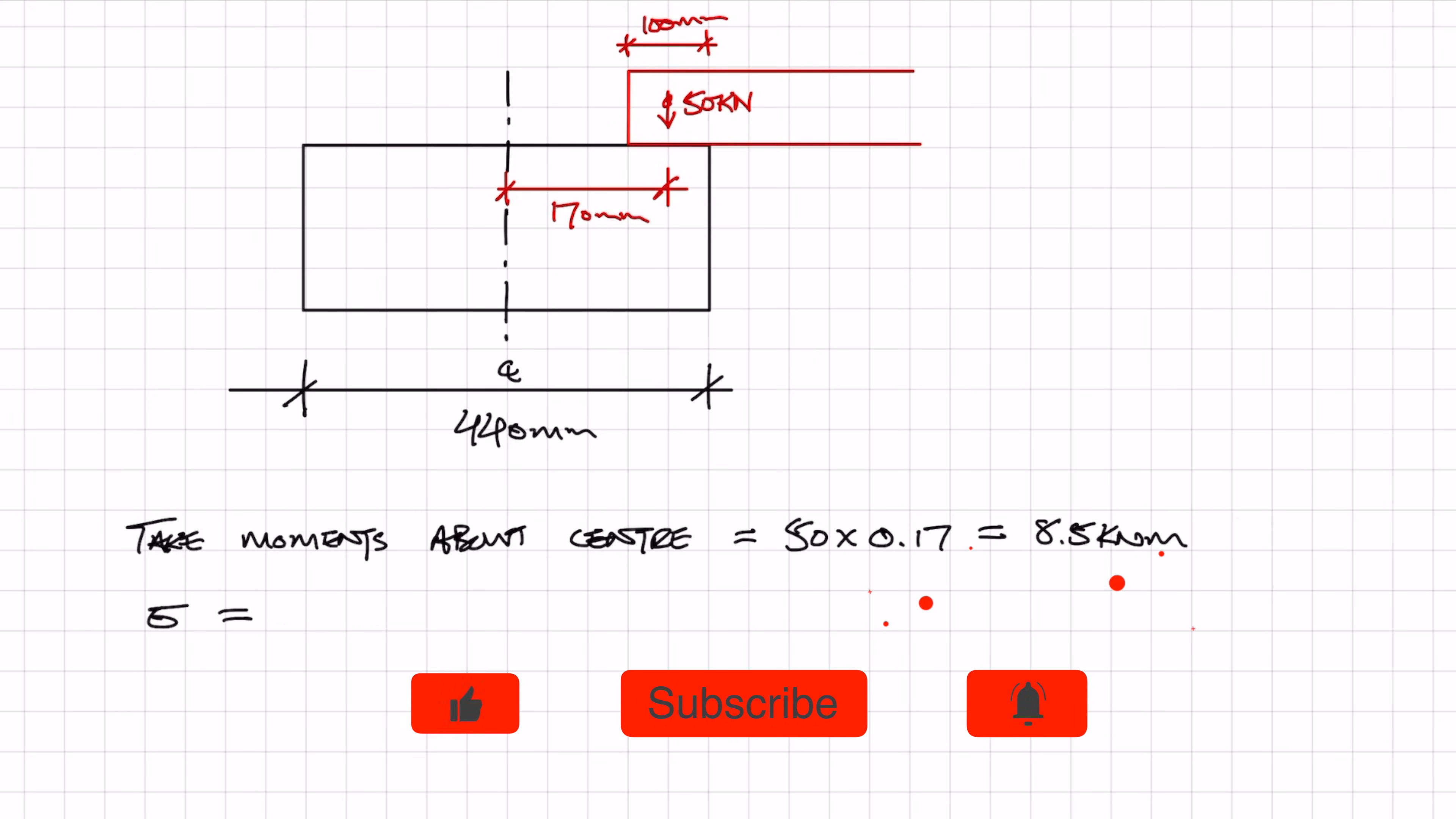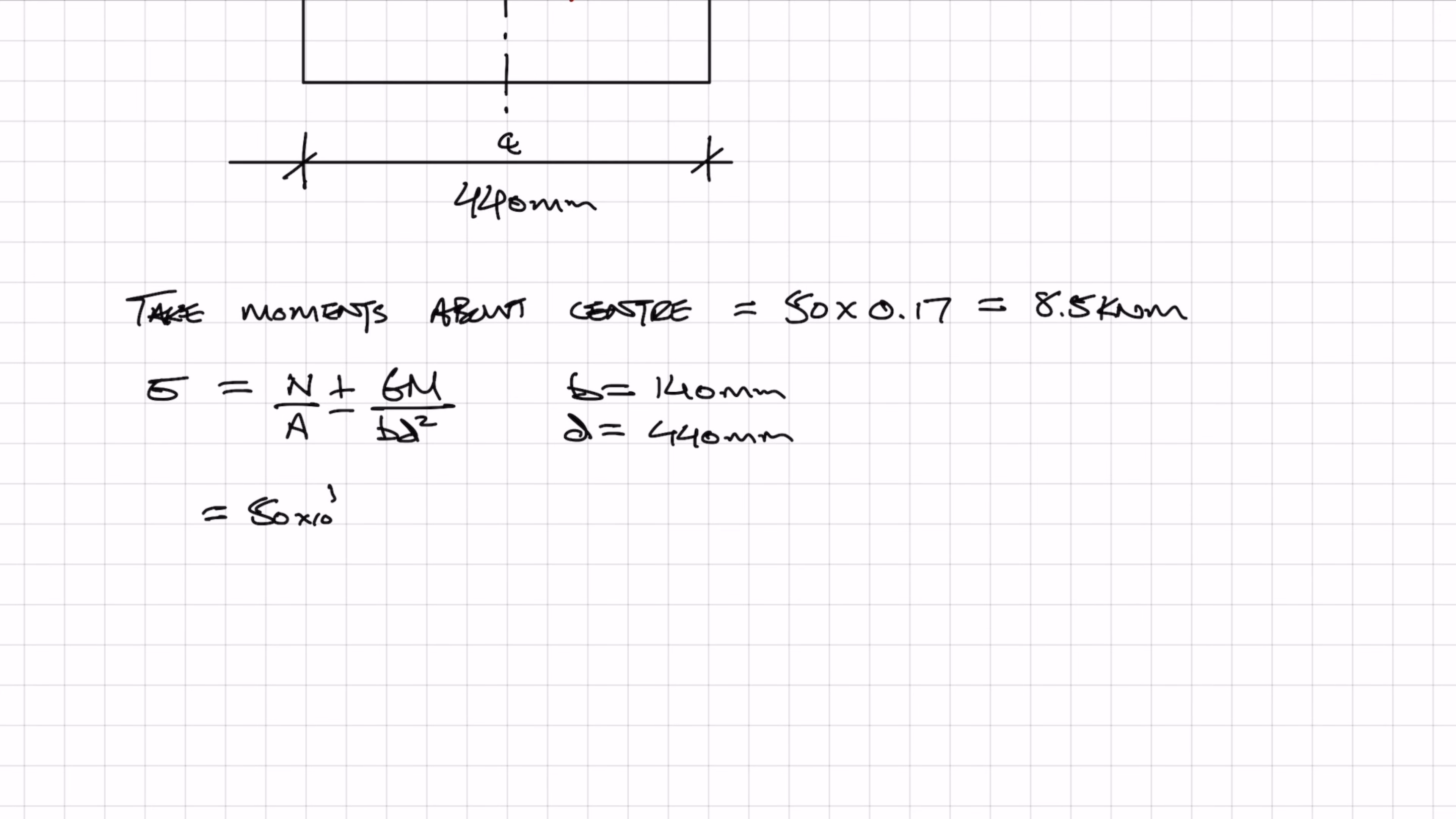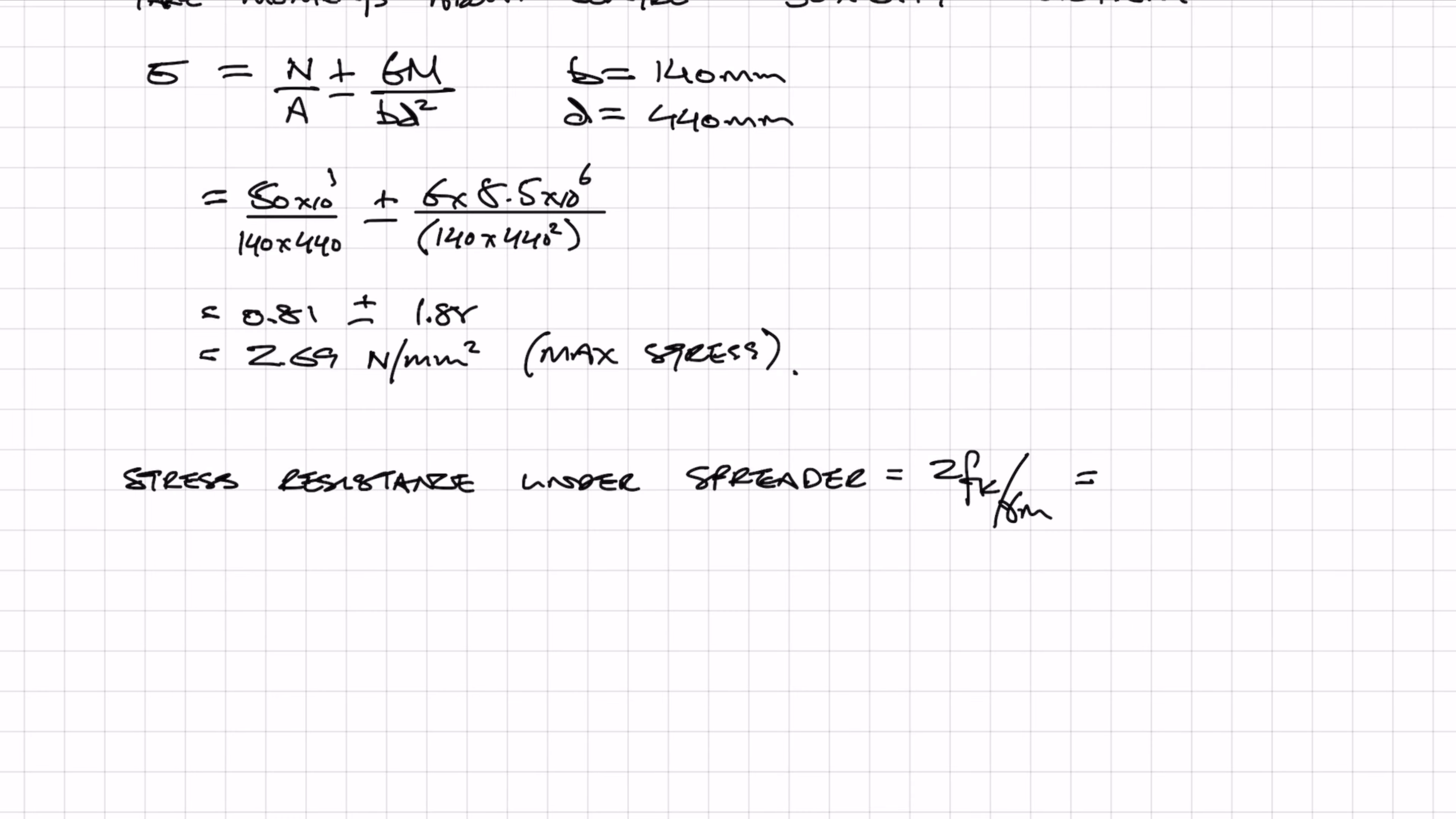Now we're going to be using these simple stress equations, and if you haven't seen this already, I suggest you go check out my foundation design video as I explain it there as well. So all you do is plug the numbers into the equation to get your maximum stress. I'm not really interested in the minimum stress, so all I'm going to do is add these values together. We get a maximum stress of 2.69 newtons per millimeter squared. Because this is now a bearing type 3 because we're using a spreader, to calculate the resistance we're now using 2 times fk over material safety factor, and this gives us a resistance of 3.65, which is greater than our applied stress, therefore it's okay.